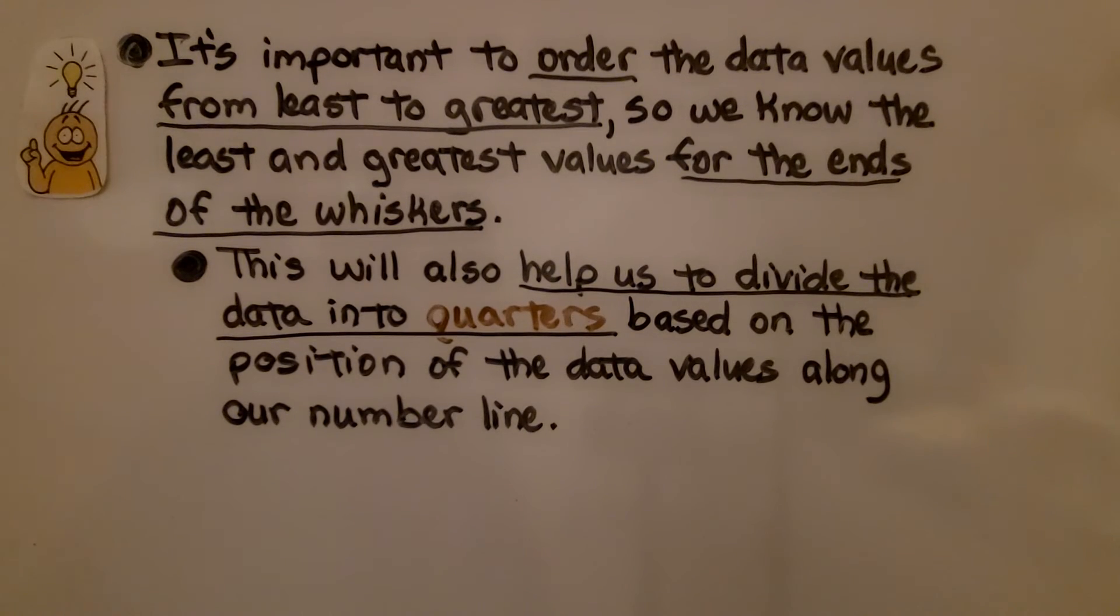It's important to order the data values from least to greatest so we know the least and greatest values for the ends of the whiskers. This will also help us to divide the data into quarters based on the position of the data values along our number line.